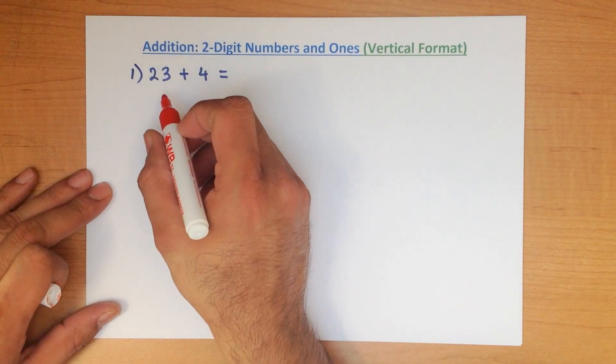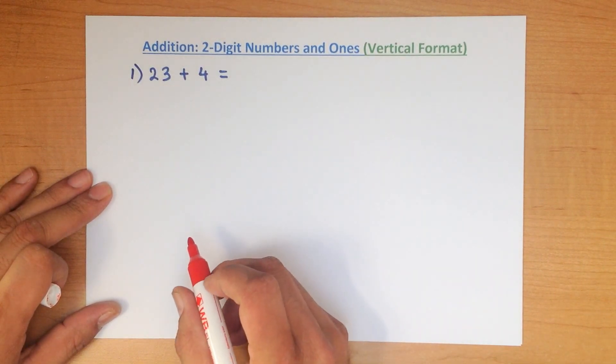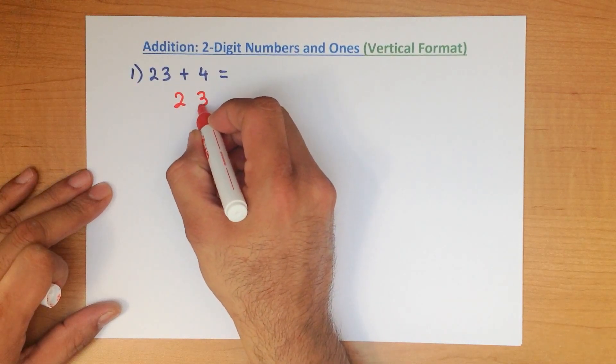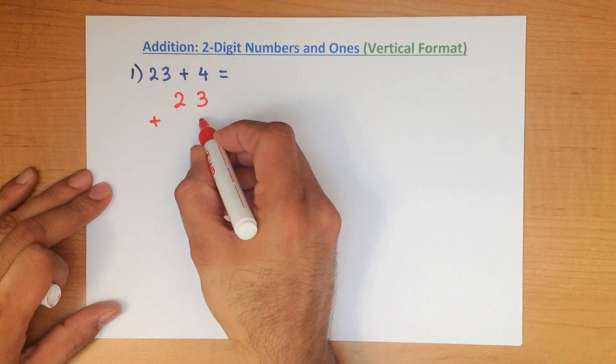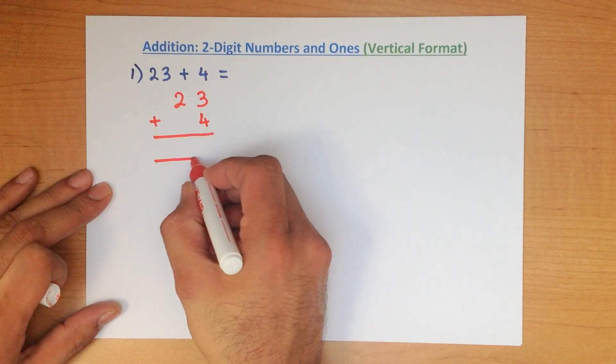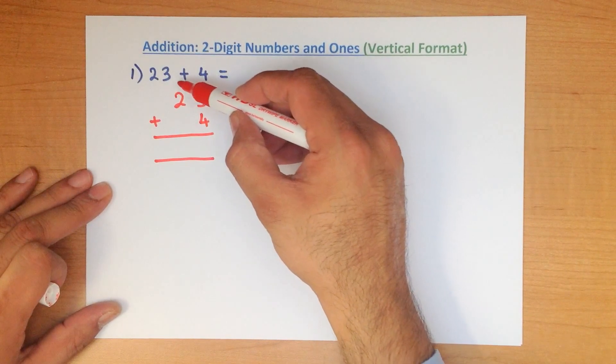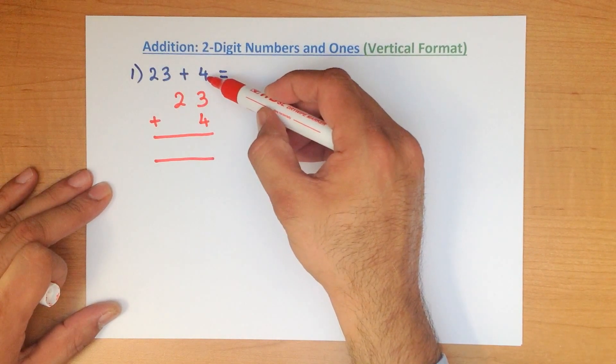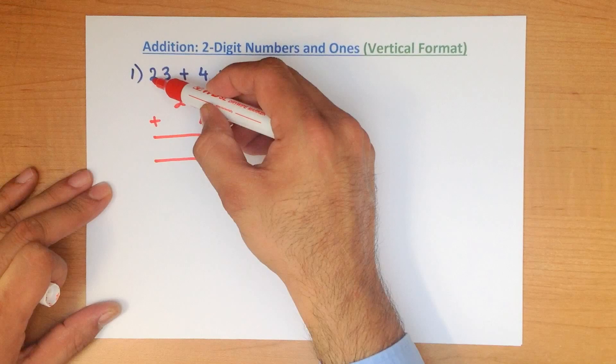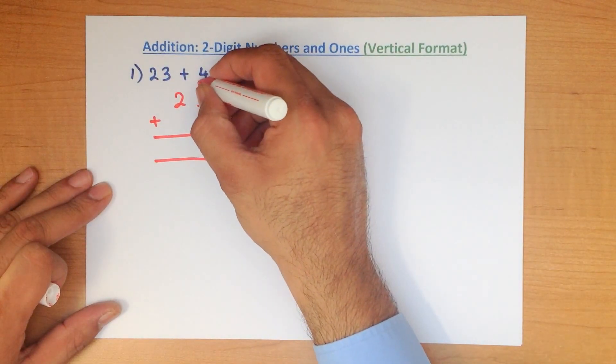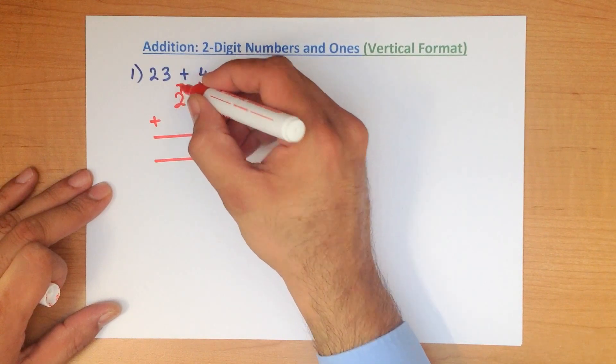The first thing we do is we write these numbers down in columns. 23 plus 4. Note how the 4 goes directly below the 3. The 3 is units. The 4 is units. This 2 over here is the tens. Let's label the columns: units and tens.